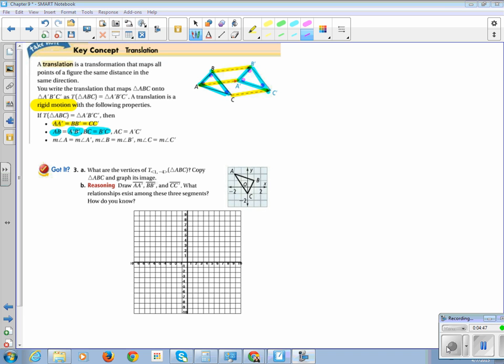When you guys look at this question here, T is for translation. The translation 1, negative 4, this means I'm going to go on the x-axis 1 unit, on the y-axis 4 units of triangle A, B, C. Copy triangle A, B, C, and graph its image. Draw the lines from, oh, let's do that first.